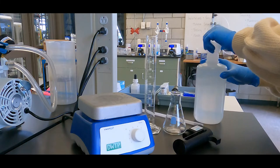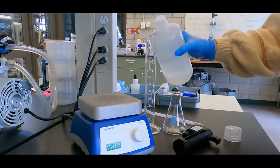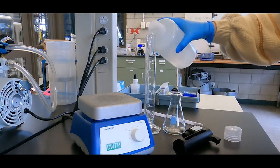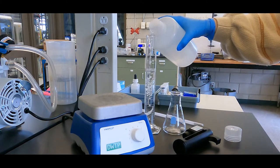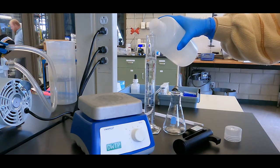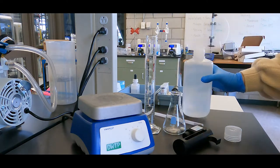Use a graduated cylinder to measure the sample volume given in the table. If the sample volume given in the table is less than 100 milliliters, top the cylinder up to 100 milliliters with deionized water.